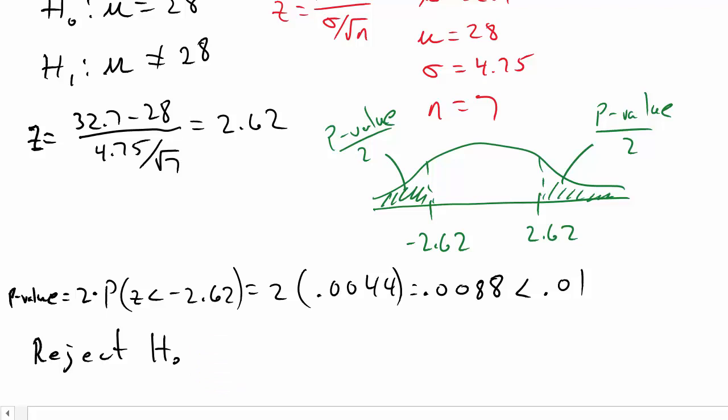I'll be doing these hypothesis tests for left-tail, right-tail, and two-tail cases where sigma is known, unknown, and for proportion P — each in its own video. I hope this helped. Don't forget to like and subscribe, and thanks for watching.